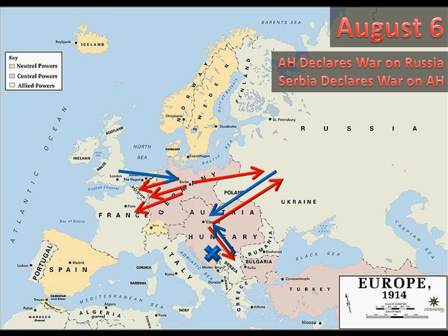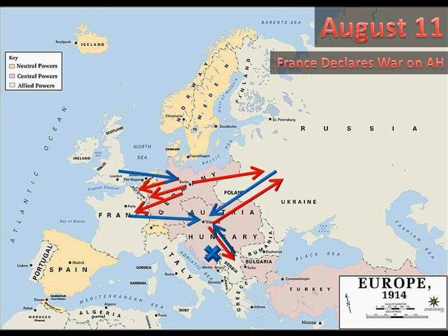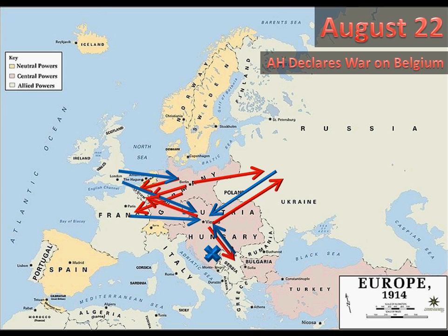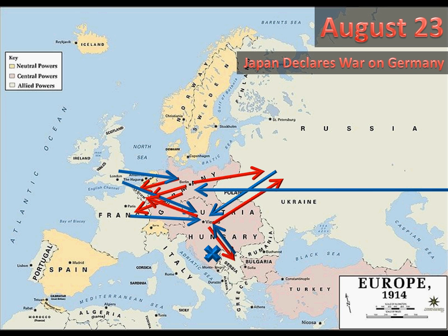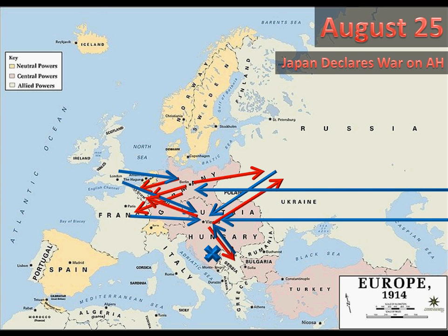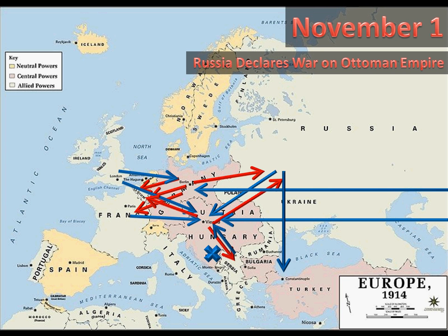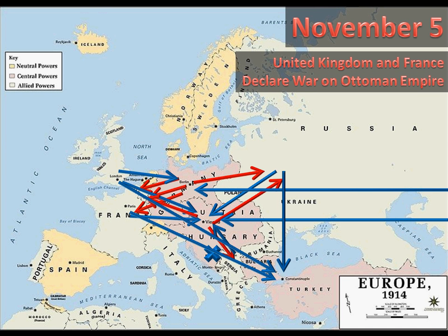Two days after that, Austria-Hungary declared war on Russia, and Serbia declared war on Austria-Hungary. Five days after that, France declared war on Austria-Hungary. A day after that, the United Kingdom declared war on Austria-Hungary. Ten days after that, Austria-Hungary declared war on Belgium. A day after that, Japan — coming in from the other side of the globe — declared war on Germany, and also declared war on Austria-Hungary two days after that. Then on November 1st, Russia declared war on the Ottoman Empire, and the United Kingdom and France followed suit on November 5th.